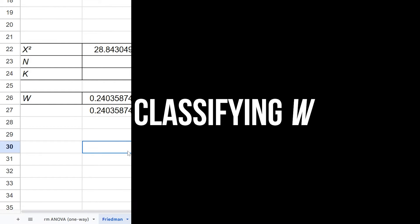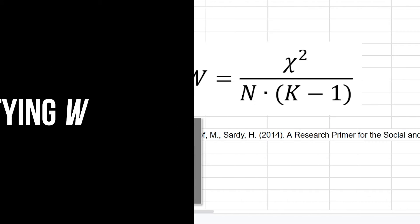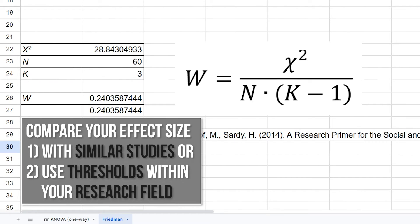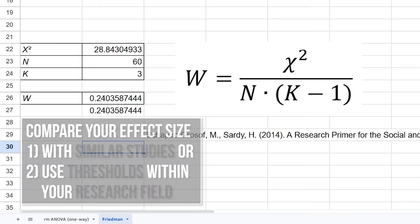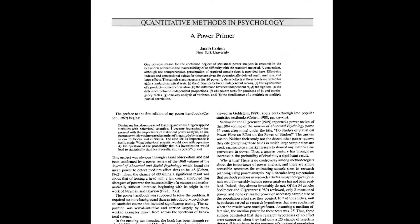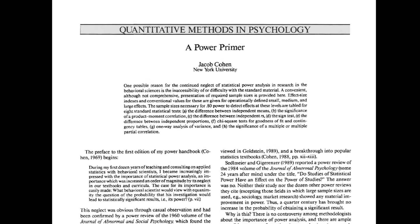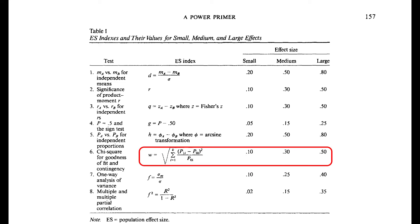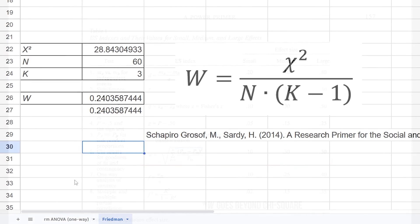For classification, use comparable studies or research field specific thresholds first, and only use Cohen when this is not the case. Cohen provides the thresholds 0.1, 0.3, and 0.5 for small, medium, and large effects, which are also used for classification of the magnitude by this function.